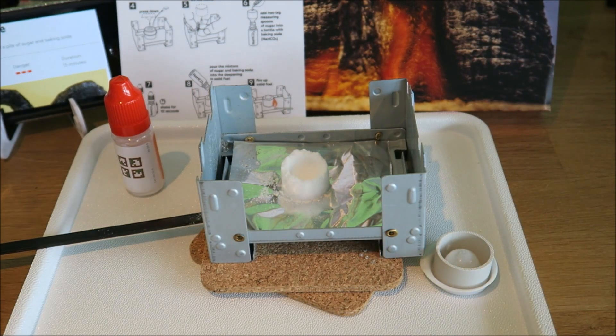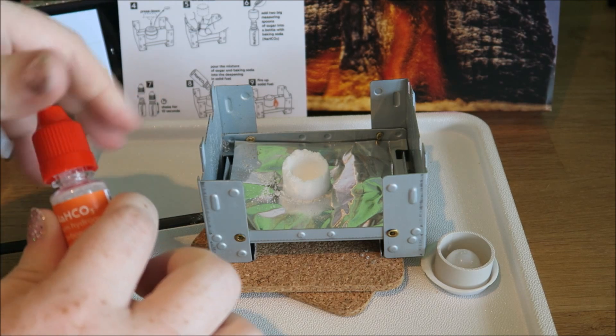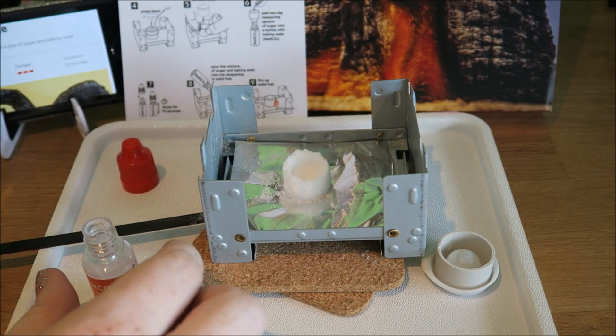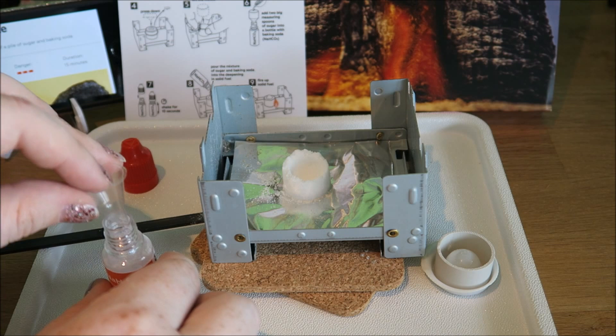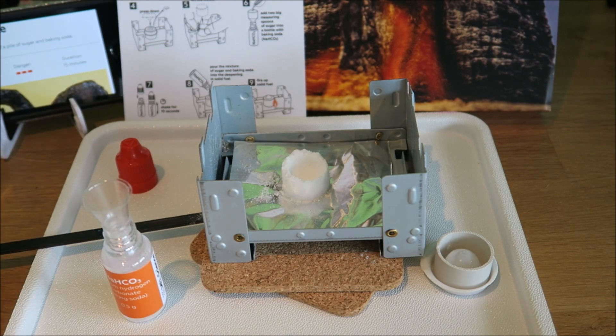Tada! Right, now we have our sodium hydrogen carbonate. Lid off that, a little measuring cylinder, and it wants two scoops of sugar.